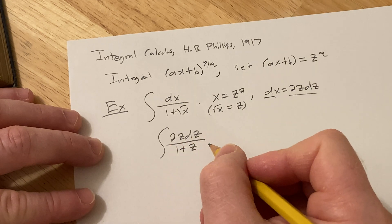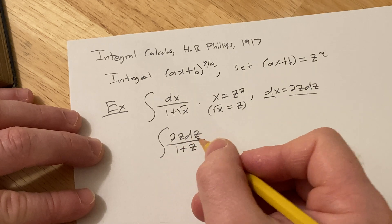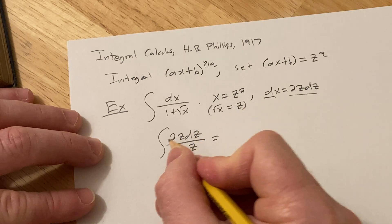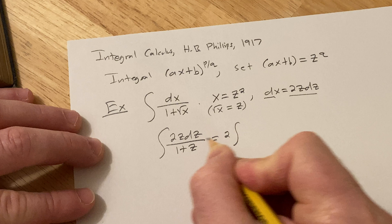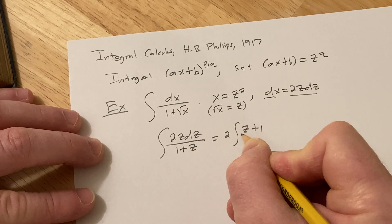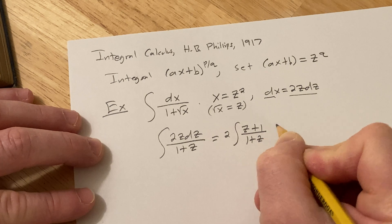There's a couple ways to proceed here. You can use synthetic division, you can use long division. I'm going to use a really fun trick. I'm going to factor out the 2, and then I'm going to write the numerator as 1 plus Z, or rather Z plus 1. So I'm basically adding 1 to the numerator.